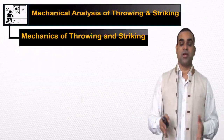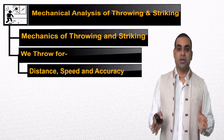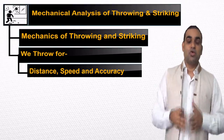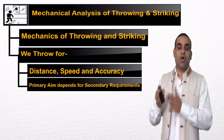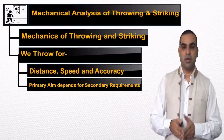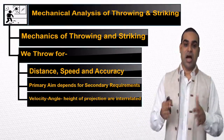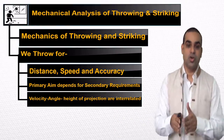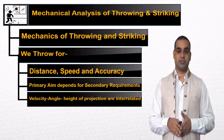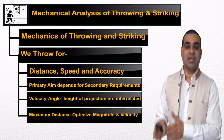The mechanics of throwing and striking — we throw for more distance, for accuracy, and for speed. Ham doori, gati aur satikta ke liye phekte hain. So mechanically the primary aims depend upon directly or indirectly on the requirement of the secondary aim. Velocity, angle of projection, release, and the height of release of the projection — in relation to the horizontal range from the release to the landing — these all are interrelated.